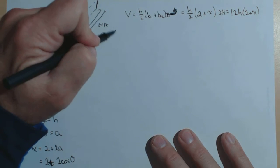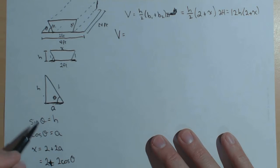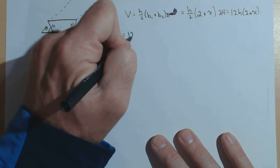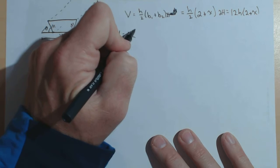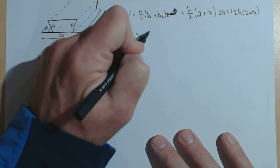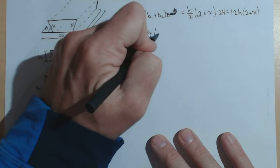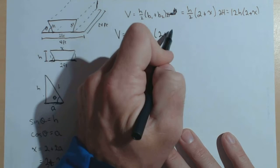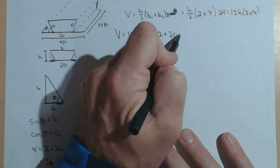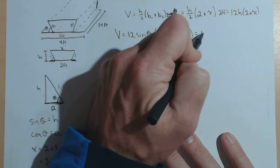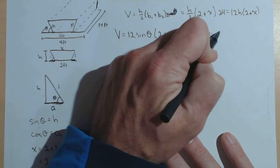Now we can get our volume in terms of theta. So first off, here's my first substitution. So I have 12 sine of theta. And now my other one, I'm putting this in for x. So times 2 plus 2 cosine of theta equals 12 sine theta.